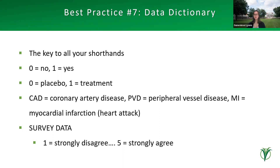Let's talk about the data dictionary. It is so important, especially if you've worked with survey data. It will be the key for all your shorthands. We see ones and zeros, which are common conventions — zero means no or placebo, one means yes or treatment. But some codes are harder to figure out, especially cardiovascular-related acronyms. It's always good to clarify those, especially if the statistician isn't familiar with the subject matter.